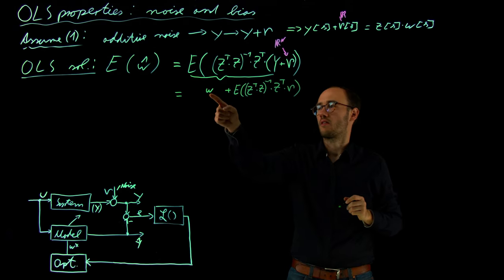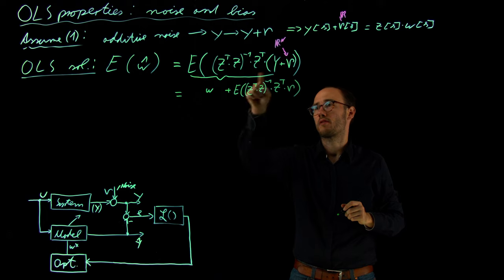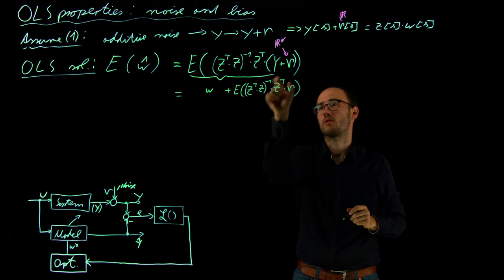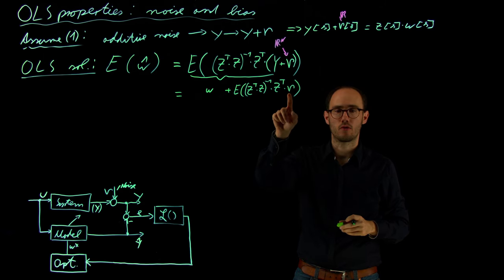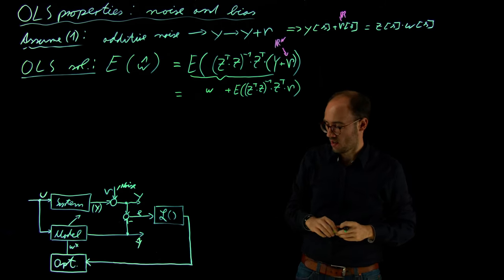And what remains is then the expectation of Z transpose times Z, inverted times Z transpose times Mu. So this is our ideal solution, which we get from the first part. And due to this additive noise, there might be a potential offset in expectation due to the noise term.